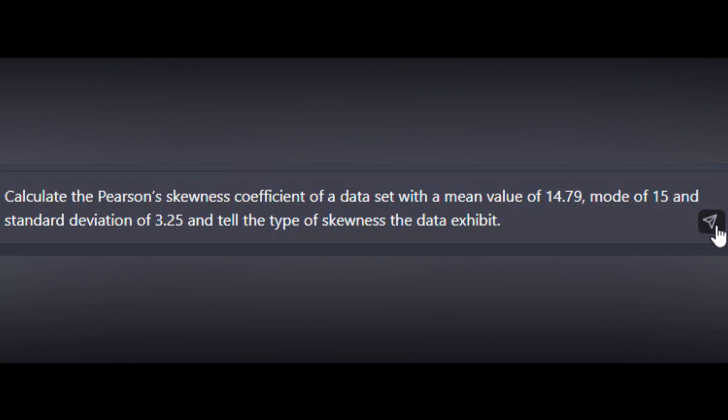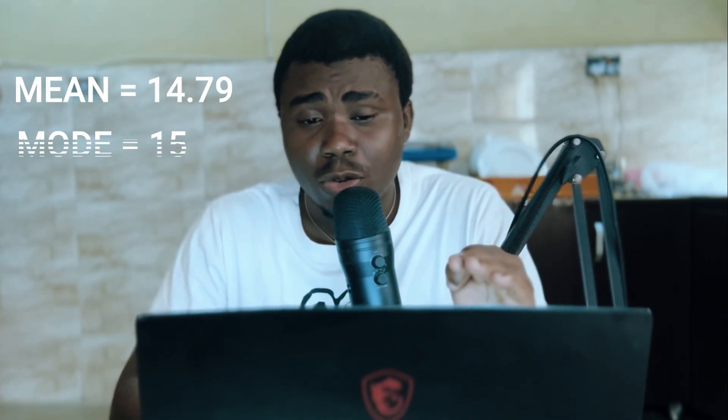For the second question, it asks to calculate the Pearson Skewness Coefficient. The standard deviation is given, and the formula for PSC equals the mean minus the mode, divided by the standard deviation. The second variation is three times the quantity of the mean minus the median, divided by the standard deviation.